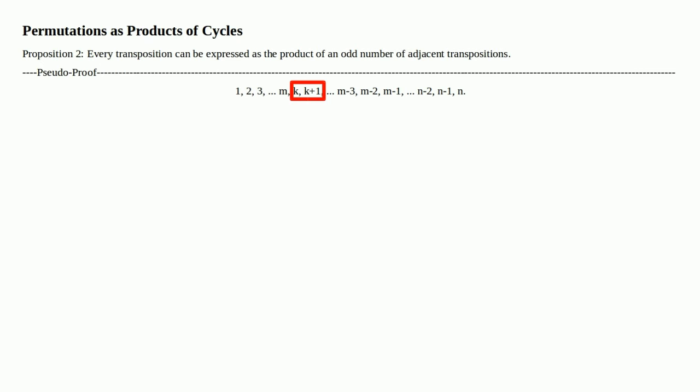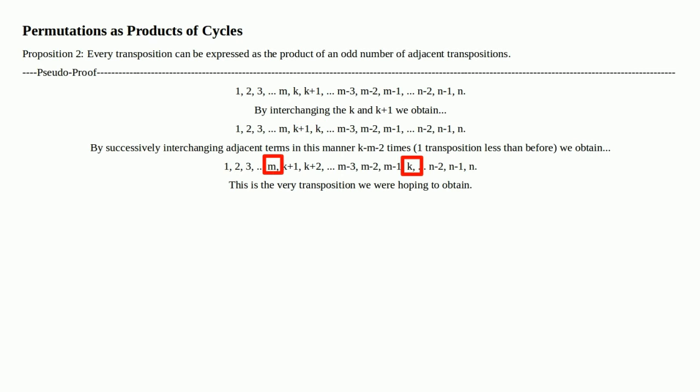So here we are. K is next to K plus 1. By interchanging K and K plus 1, we obtain the following ordering, pushing K in front of K plus 1 to the right. By successively interchanging adjacent terms in this manner, M minus K minus 2 times — remember, that's one transposition less than before — we obtain the following ordering: 1, 2, 3, all the way to M, with K and M switched, all the way to N. This is the very transposition we were hoping to obtain.